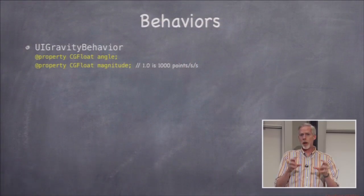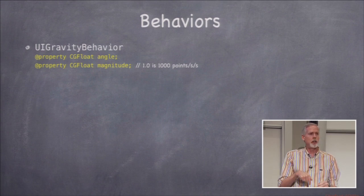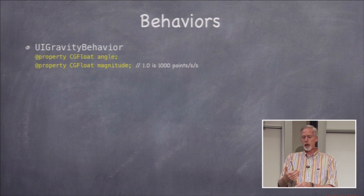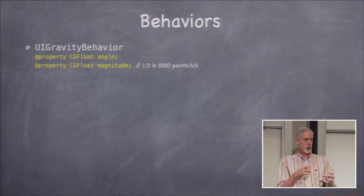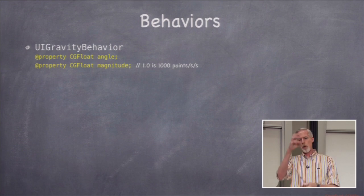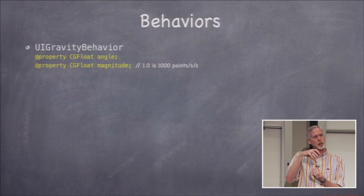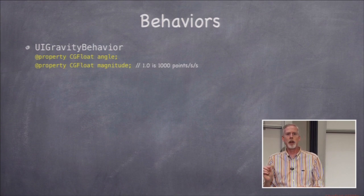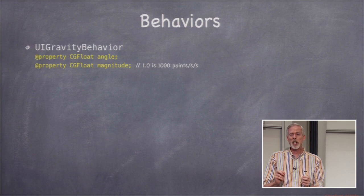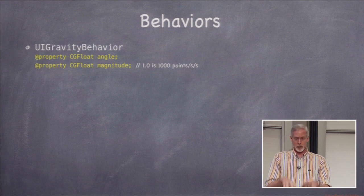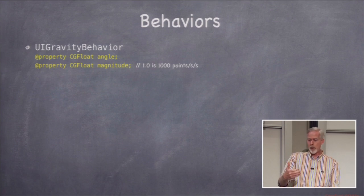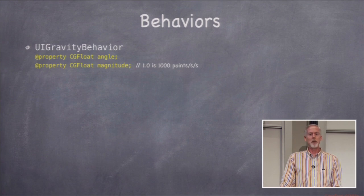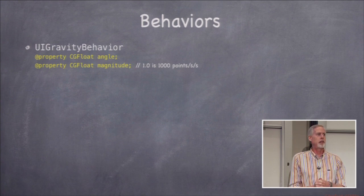Now let's look at the concrete behaviors available. Gravity: UIGravityBehavior by default pulls downward. You can set it to any angle — up, left, multiple gravity sources. A magnitude of 1 means 1000 points per second squared acceleration, which feels similar to real-world 9.8 meters per second squared. So holding your phone up and letting gravity work feels like something falling in real life. You can have multiple gravity behaviors pulling from different directions — if two equal gravities pull from opposite directions, the item floats in the middle.